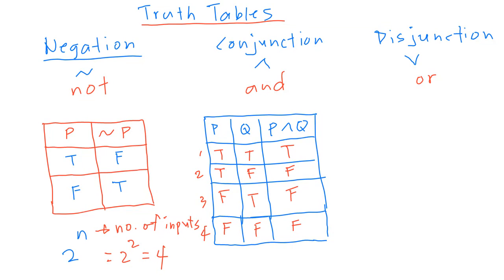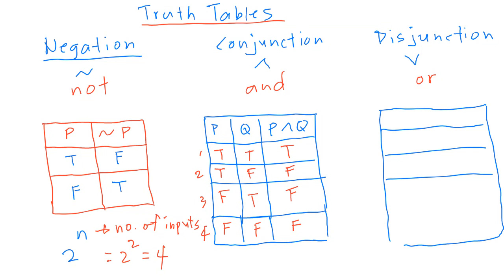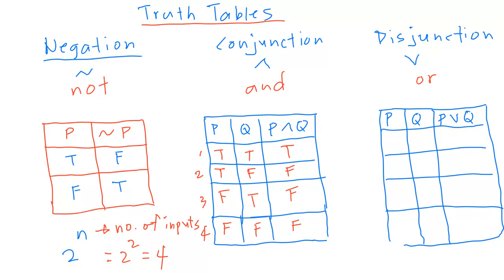For disjunction, do the same format for the table — you will have 4 possible combinations. We have p, q, and the symbol for the output is p OR q. Let me label the inputs and the output column.